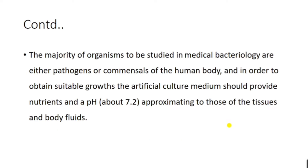The majority of organisms studied in bacteriology are either pathogens or commensals of the human body. Commensals are organisms that are a natural part of our body and do not cause any infection. In order to obtain suitable growth of pathogens or commensals in artificial culture media, we should provide nutrients at a pH of about 7.2, approximating those of tissues and body fluids. It is mandatory that we maintain pH 7.2 in the artificial culture media for better bacterial growth.